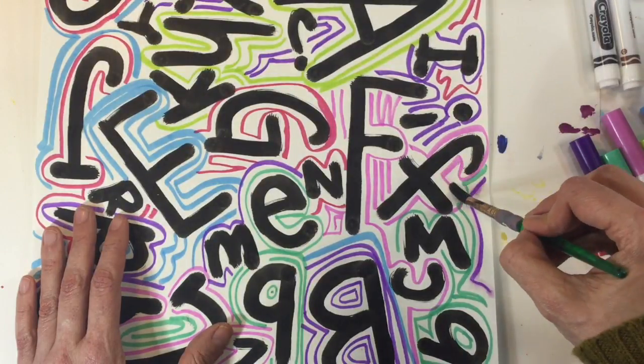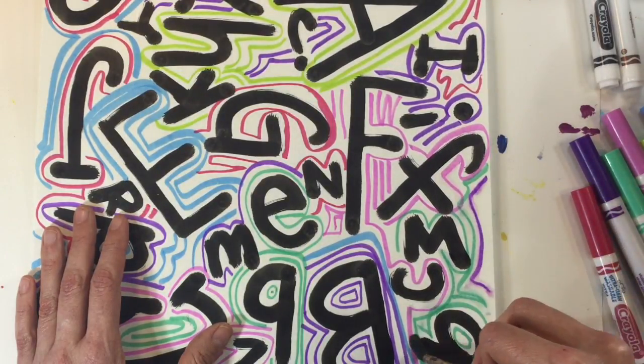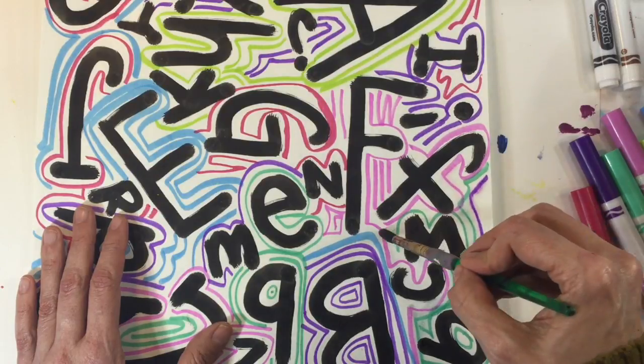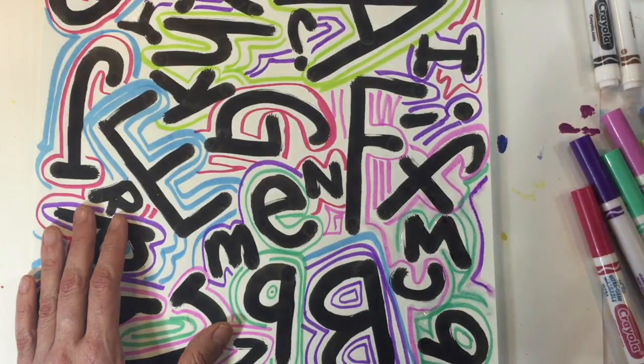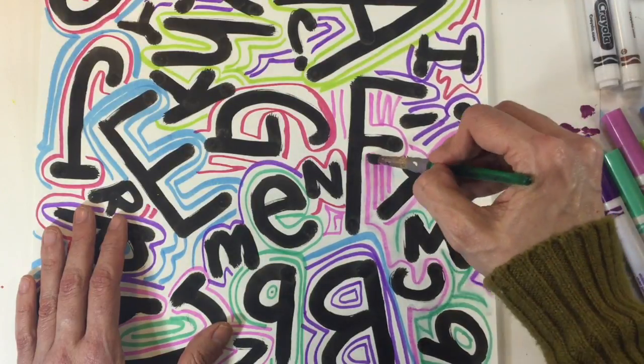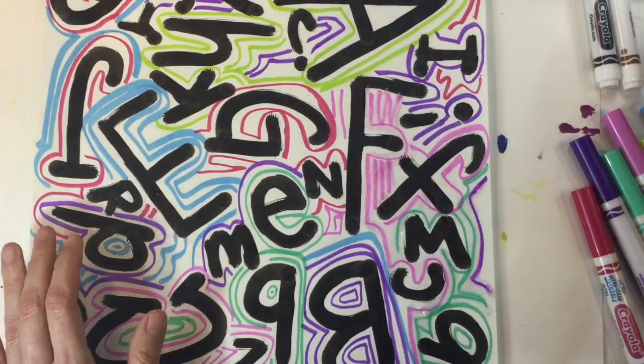Once you have hugged all of your letters, let's do a little bit of magic. Your markers are what's called water-soluble. That means if you add water to your markers, once it's on your paper, it turns into a kind of watercolor paint.